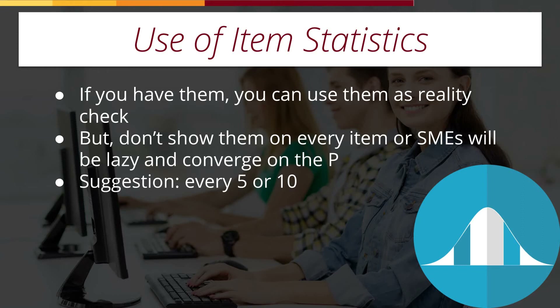You can also use item statistics as part of this process — that is, if you have them. If your items have been delivered in the past and you've got statistics on how many people actually got them right, you can use them here. The best practice is not to show them on every item, or the subject matter experts will just converge on the p-value. For example, they might discuss one item and then look to see how many people actually got it right — say it was 71% — and they all go around 70%, even though they aren't focusing on the content as they should. What is often suggested is that item statistics, if you have them, only be presented every 5 or 10 items. So if you've got 100 items, only present statistics on maybe 10 of them, as an occasional reality check to keep raters aligned, while still getting them to focus primarily on the content.